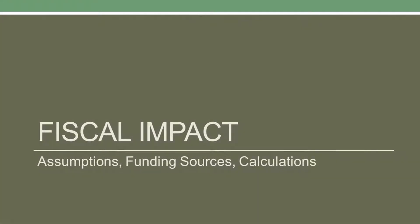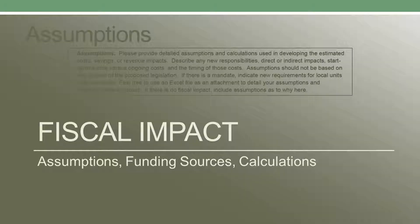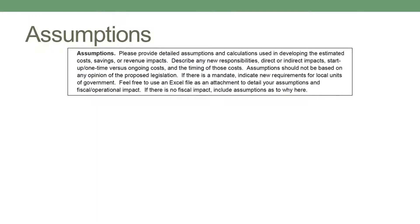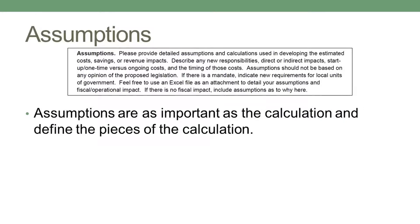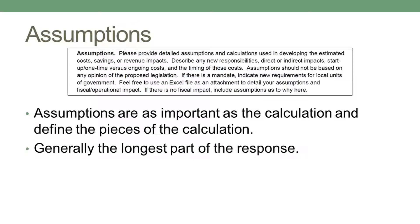The next three sections address the fiscal impact directly: assumptions, funding sources, and the actual calculation of your bottom-line estimate of the legislation's impact on your agency. In these sections, be sure to address the impact on local units of governments, such as counties, cities, and local school districts. Assumptions are equally as important to the fiscal analyst as the calculation. We need to understand how you arrived at the numbers used in your final calculation. This may require providing several underlying calculations.